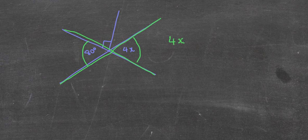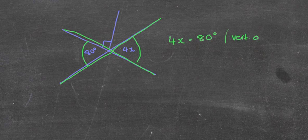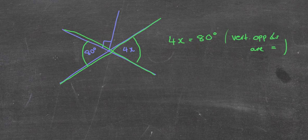So I'm going to write down here, 4x is equal to 80 degrees, brackets, my reason, vertically opposite angles. Now, you probably get away with writing that, but I'm going to put are equal. Okay. So I've now formed myself an equation which we need to solve.